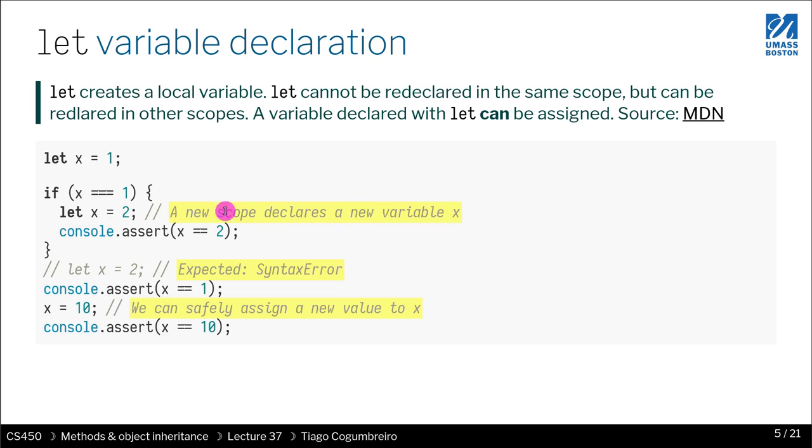So the second version is let. And let creates a local variable and cannot be redeclared in the same scope, but can be redeclared in different scopes. So it's a very nice way of declaring a variable.